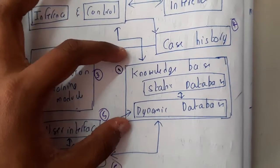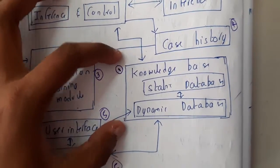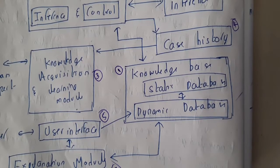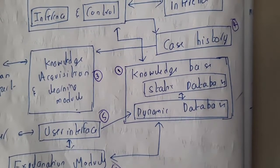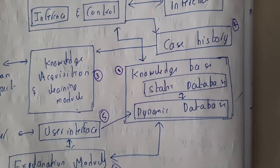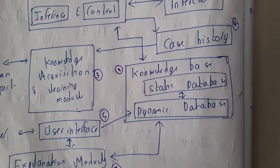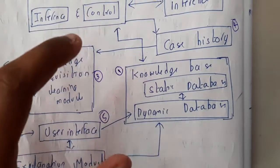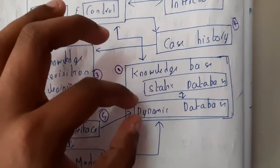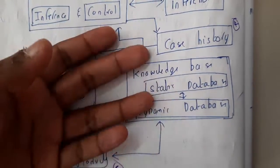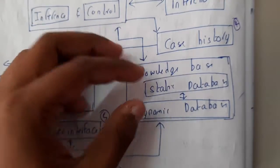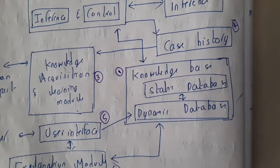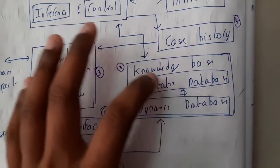Initially, the first thing we'll be discussing is the knowledge base. We can clearly say that the knowledge base is the heart of the expert system — it is the place where everything is stored. It consists of a static database and a dynamic database. Static is nothing but predefined facts, while dynamic means if any new data comes in, it falls under dynamic.